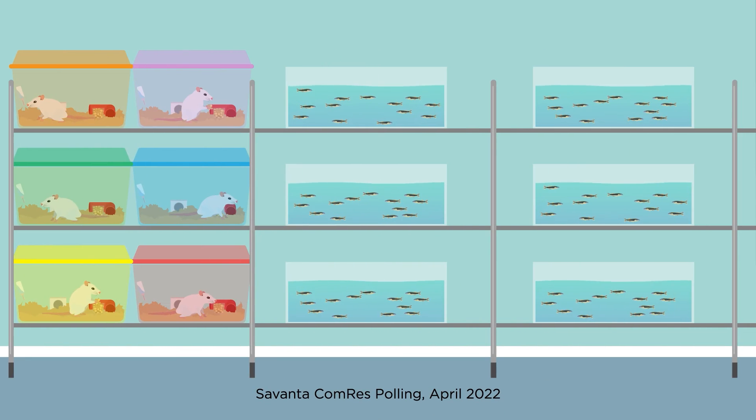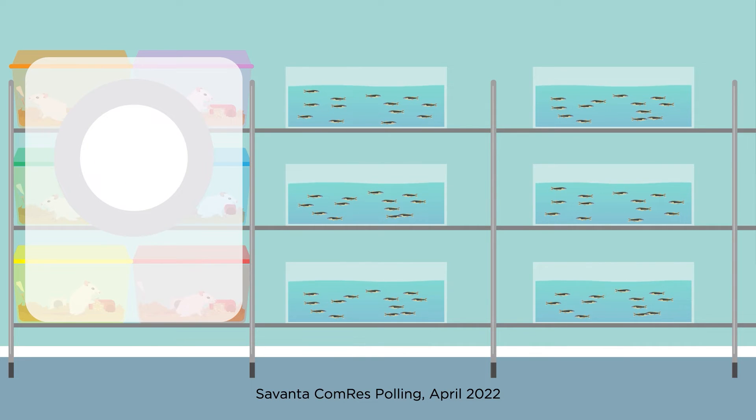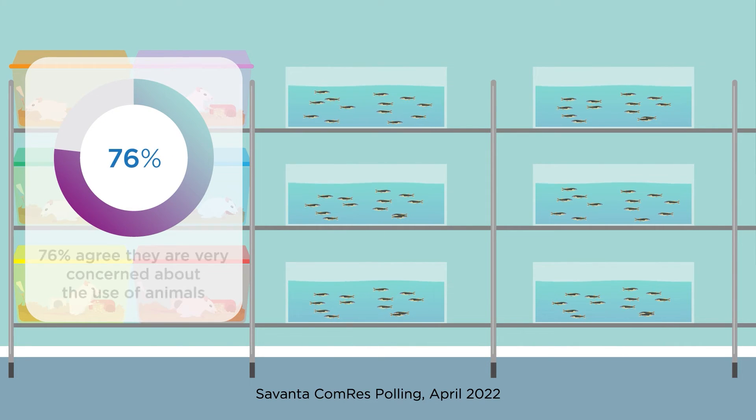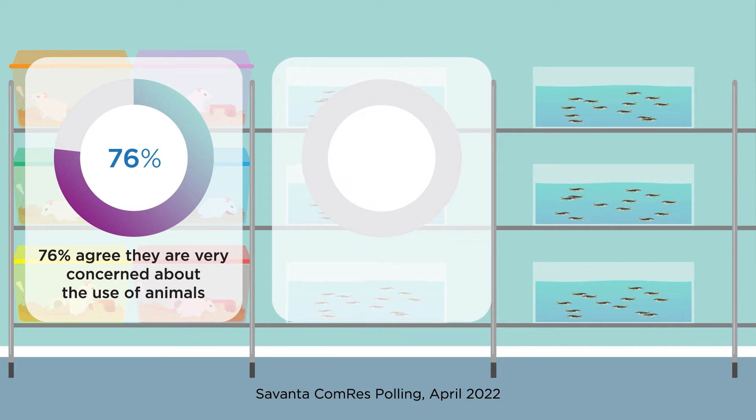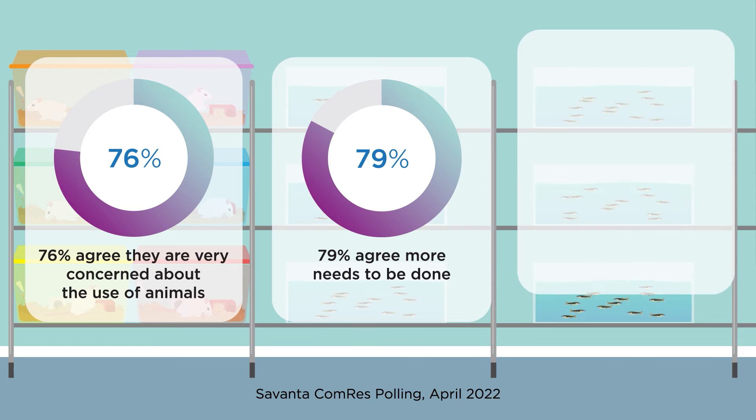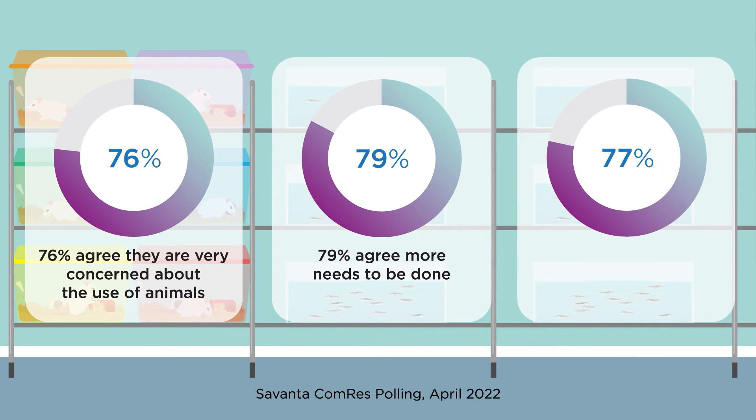Over three quarters of adults say that they are very concerned about the use of animals in scientific research and testing, and that more needs to be done to speed up the development and uptake of alternatives to animal experiments, and that the UK government should commit to phasing out lab animal use.